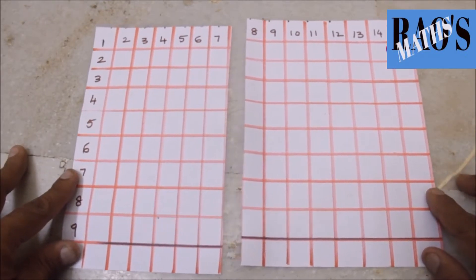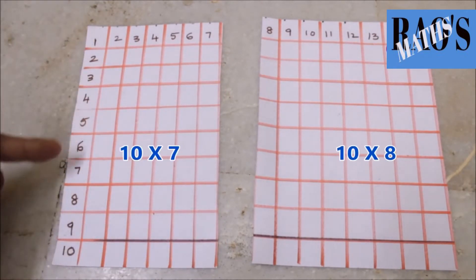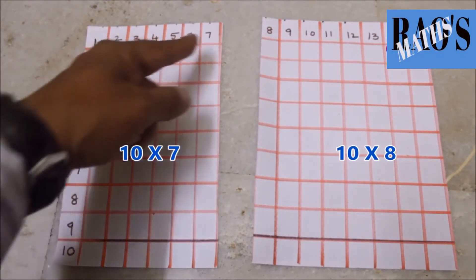Now I split the paper into two bits. In the first bit we have 10 rows and 7 columns.